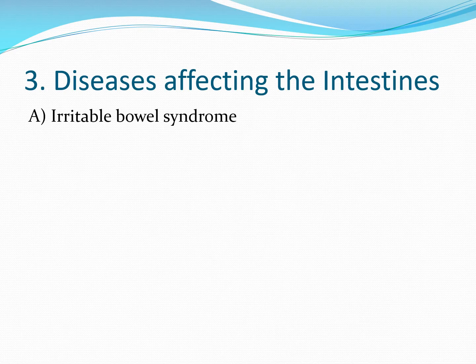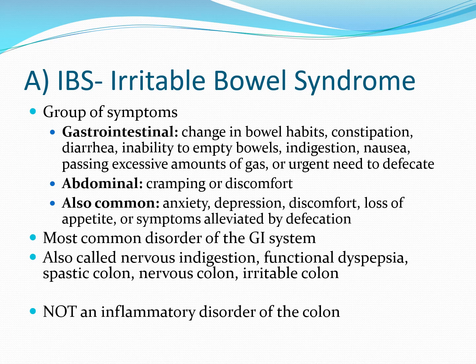Let's move on to diseases that primarily affect the intestines. The main one we'll discuss is irritable bowel syndrome. Many symptoms can be seen with IBS, including symptoms associated with GI function, abdominal pain and cramping, as well as symptoms like anxiety, depression, and loss of appetite. It is the most common disorder of the GI system, and it is important to note that this is not necessarily an inflammatory disorder of the colon. Several names are associated with IBS, including nervous indigestion, functional dyspepsia, and nervous or irritable colon.